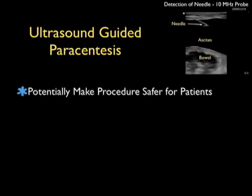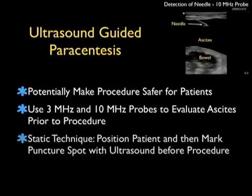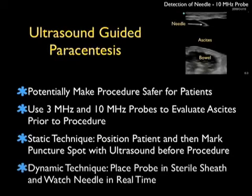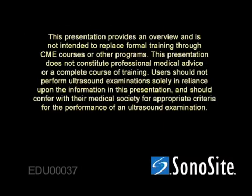In conclusion, thanks for tuning in for ultrasound guidance of paracentesis. Ultrasound guidance can potentially make the paracentesis procedure safer for our patients, and using a combination of both the 3 and 10 MHz probes can fully evaluate the ascites prior to a procedure. We can use either a static technique — positioning the patient and marking the puncture spot with ultrasound prior to the procedure — or a dynamic technique, where we place the probe in a sterile sheath and watch the needle in real time go through the abdominal wall into the ascites fluid. Either technique can potentially decrease your complication rate. Thank you.